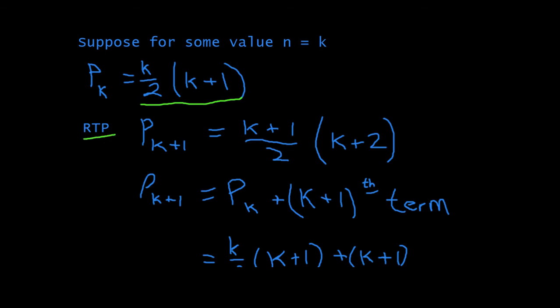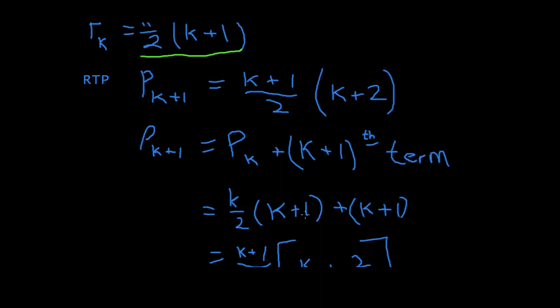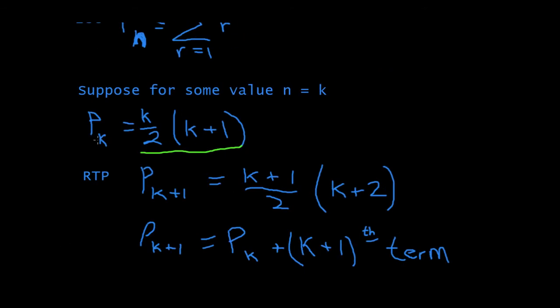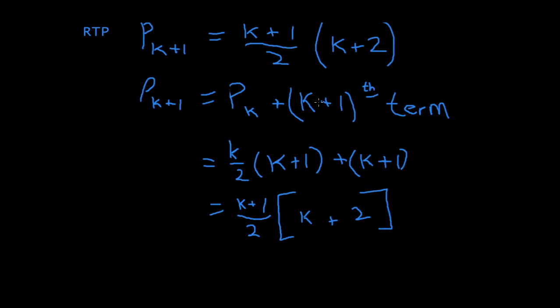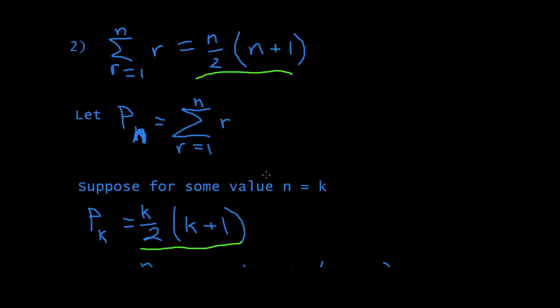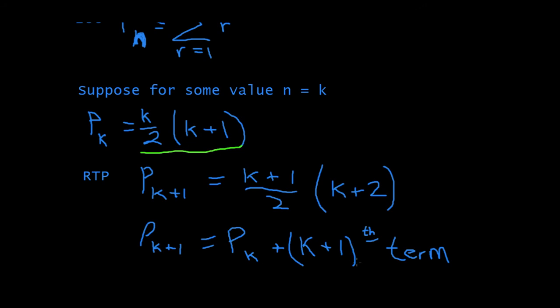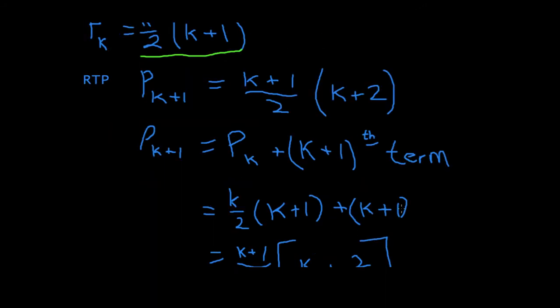This means required to prove that PK plus 1 will therefore be equal to PK plus the K plus 1 term. We know what PK is. We wrote it up here. We substitute it back in. And then, what's the K plus 1 term? We use the summation to find that. So, we put it back into the summation as K plus 1, and we can get K plus 1.